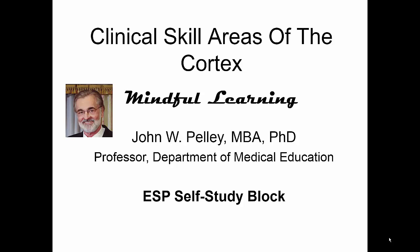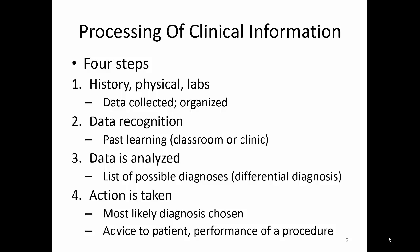Let's consider first the steps in processing information during a patient encounter before we look at the anatomy of the brain. The raw information which is collected includes the history and physical along with laboratory reports. This is where you will use your senses the most. For example, some of the information is heard during the history or seen and felt during the physical exam. In some cases such as untreated diabetes you will use the sense of smell to detect acetone on the patient's breath.